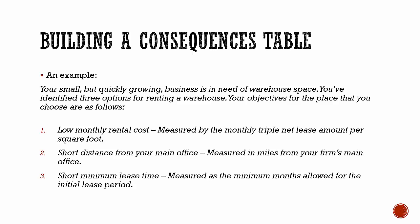Our objectives are as follows. We want low monthly cost, measured by the monthly triple net lease amount per square foot. We want a short distance from our main office, measured in miles from our firm's main office. And we want a short minimum lease time, measured as the minimum months allowed for the initial lease period. Note that we list the objective and then we list how we're going to measure that objective.